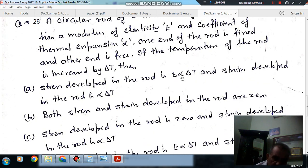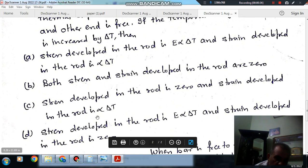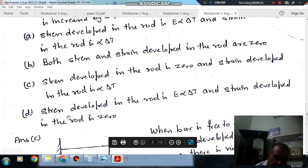Option A: Stress developed in the rod is E×α×ΔT and strain developed is α×ΔT. Option B: Both stress and strain developed in the rod are zero. Option C: Stress developed in the rod is zero and strain is α×ΔT. Option D: Strain developed in the rod is E×α×ΔT and stress is zero.